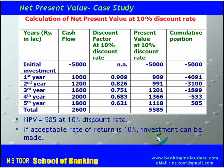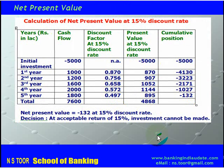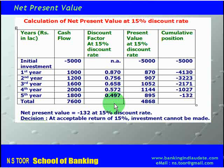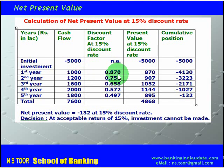Now we look at another case — net present value at a 15% discount rate. The same cash inflows are now discounted at 15%, with discount factors obtained from NPV tables. For the first year, cash inflow is 1000, the discount factor is 0.870, and the present value comes to 870.